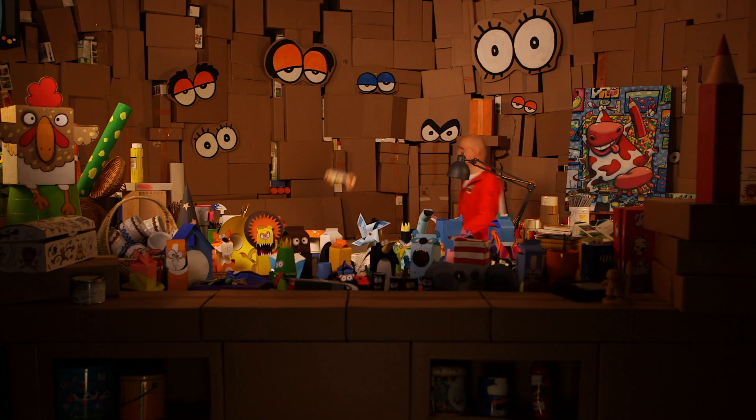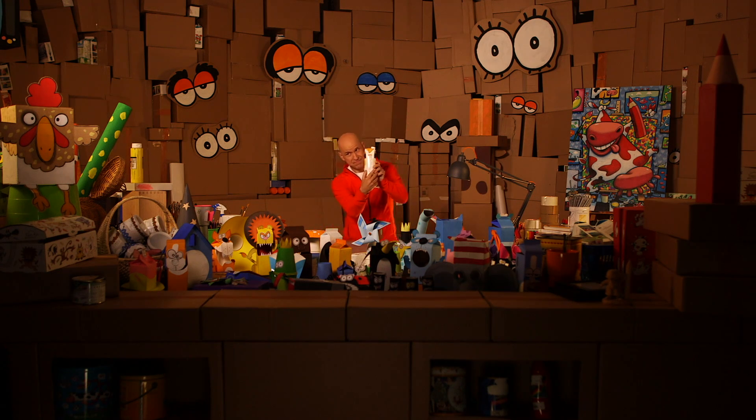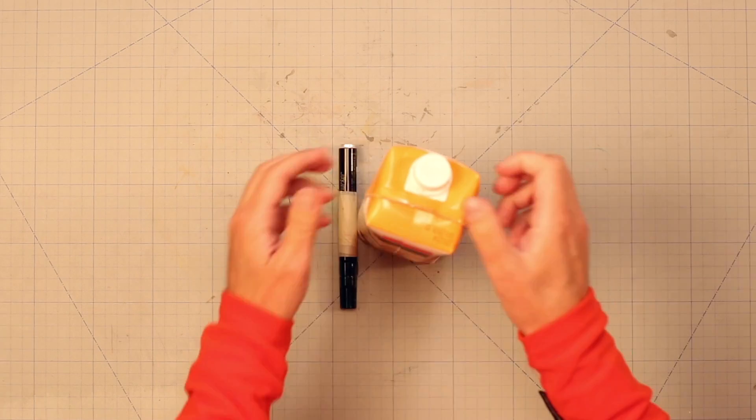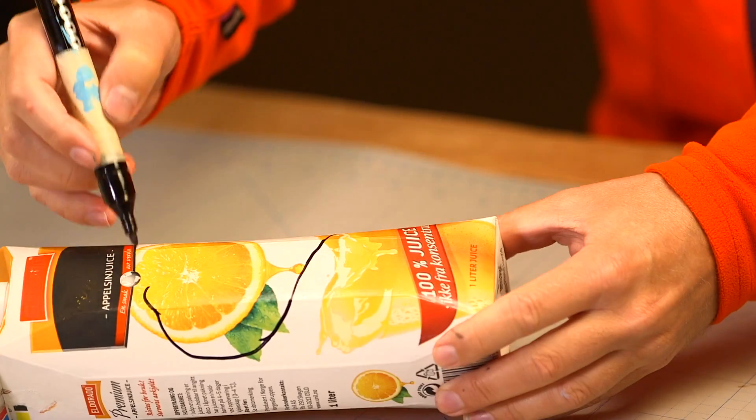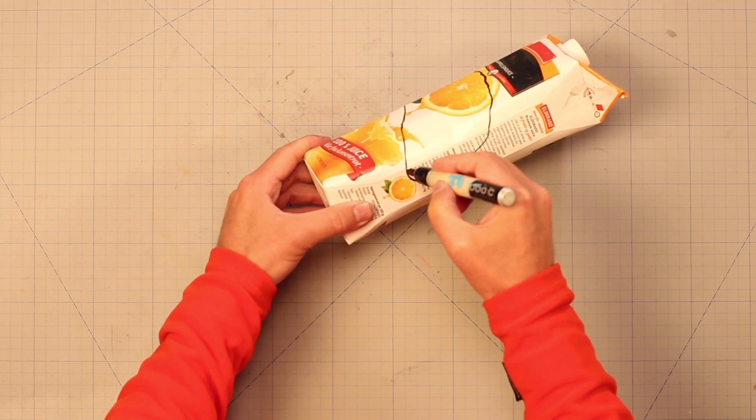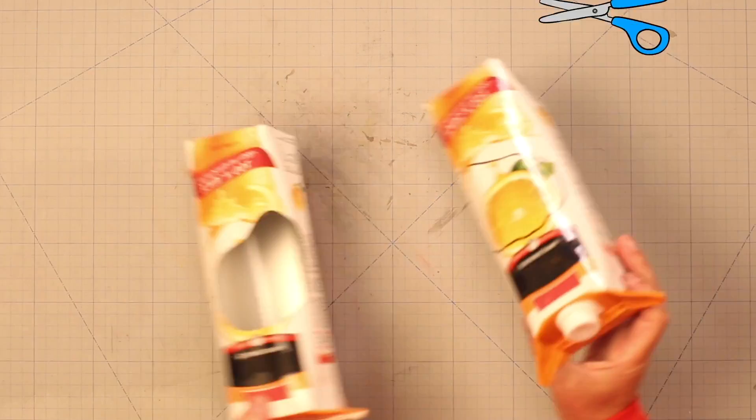Crazy dog! Hey, a drink carton, just what I need. I start with folding out the flaps, then I draw the shape for the mouth, then we cut it out.